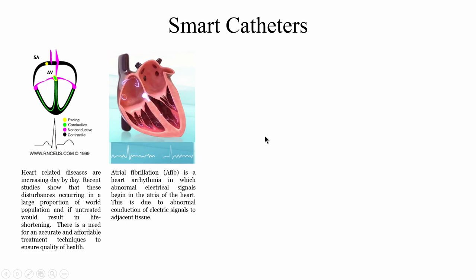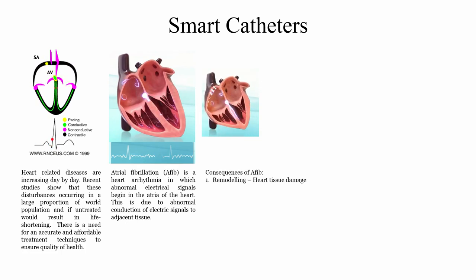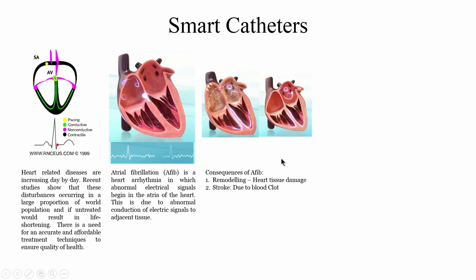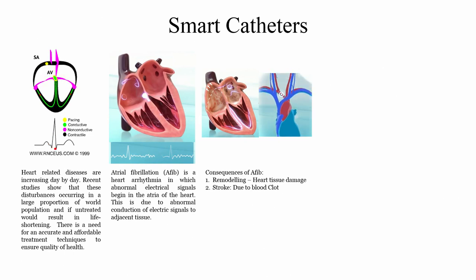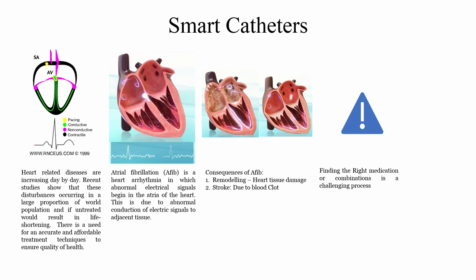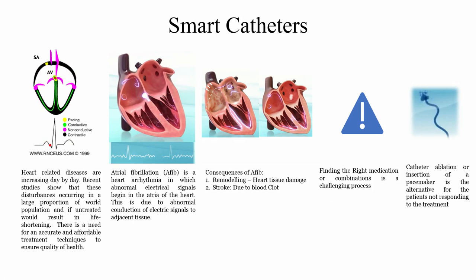The consequences of AFib include remodeling of heart tissue, and there can be stroke due to blood clots caused by this uneven beating. That blood clot can go anywhere, including the brain, and cause stroke. The way to treat this is mostly with medications; however, medication screening is a very challenging process. When it comes to surgical treatment, the surgeon will insert a catheter and ablate the tissue — we will talk about this after the video.